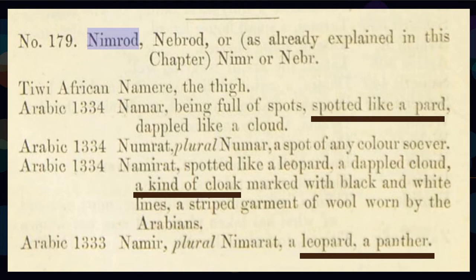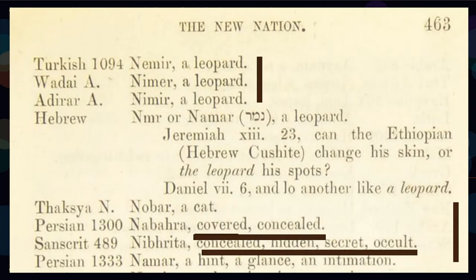In the Arabic, you see a number of translations. What's interesting is you see notations about being spotted like a pard — that's a leopard — and also this idea of being cloaked. You also see a variety of spellings, so you need to look out for that. When you're looking at Nimrod or constructs of Nimrod, there are all sorts of variations in how this word is translated. This name Nimrod is also translated as Namar, which translates to leopard in a number of languages.